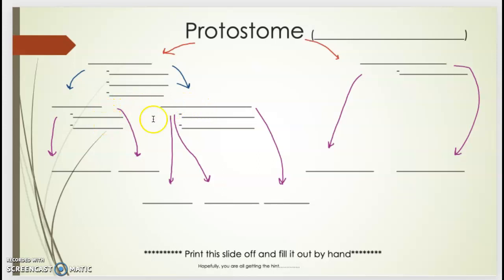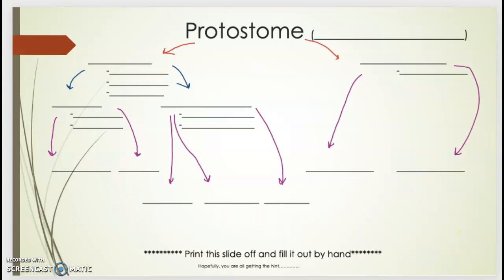The two subgroups are shown by solid lines, each with their own key features. On the right side, we don't have subgroups — we go directly down to the phylum level. The purple lines represent moving down to the phylum level of classification. Each of the groups at the bottom represents phyla sitting within the overarching big picture of protostomes.